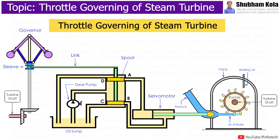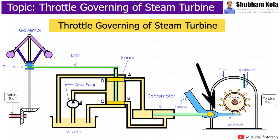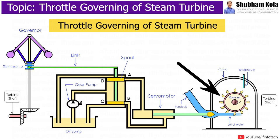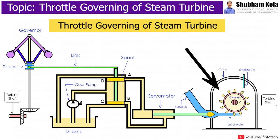In this video, we are going to discuss the construction and working of throttle governing of steam turbines, which is used to control the power output of the turbine according to the load on the alternator, by keeping the rotational speed of the turbine constant.